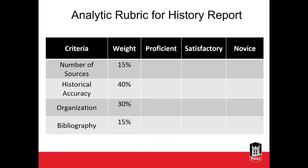There's also an analytic rubric for a history project — looking at how well the student did on their essay and distinguishing performance in terms of historical accuracy. This rubric is written in a different way than the prior rubric, but we looked at a similar rubric a little bit earlier. You can use analytic rubrics to grade essays and term papers as examples, though you can use them for other things too.